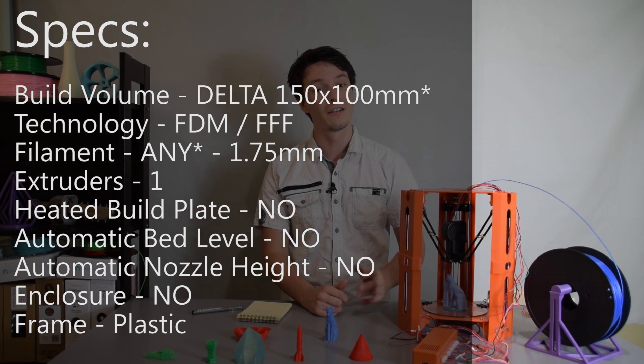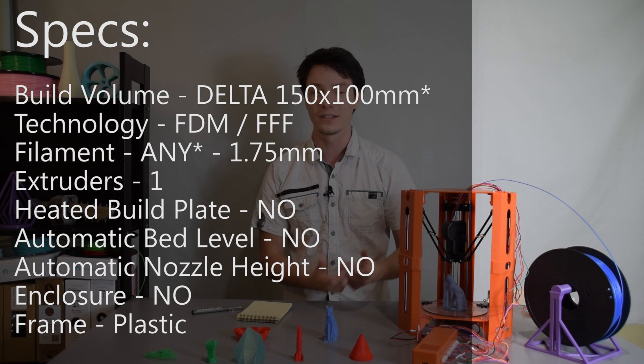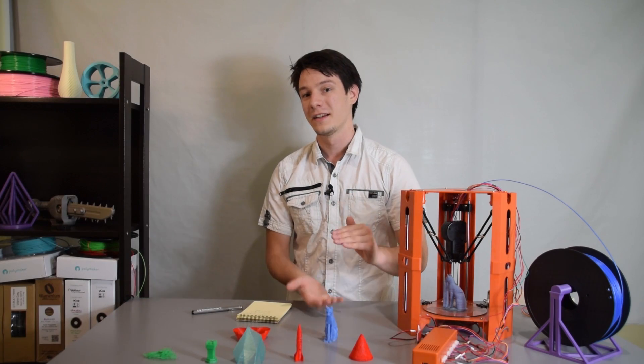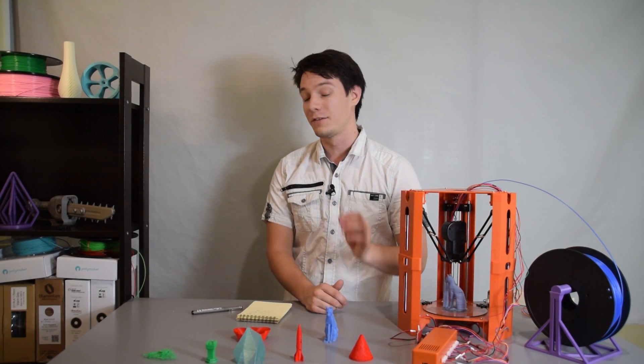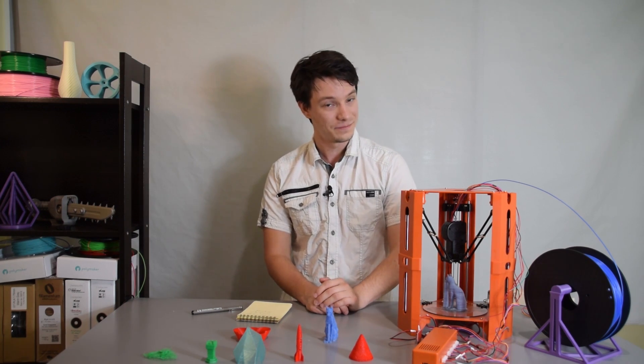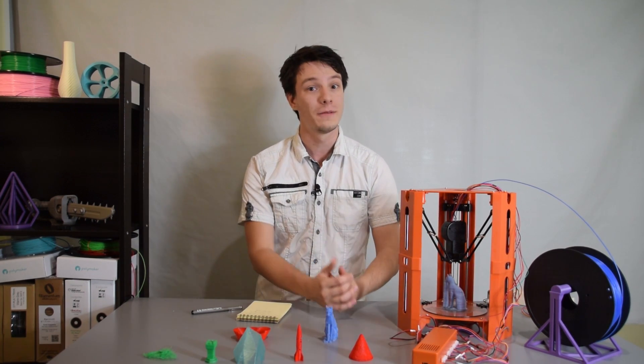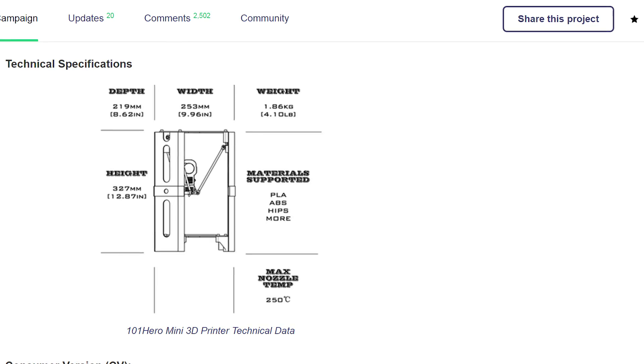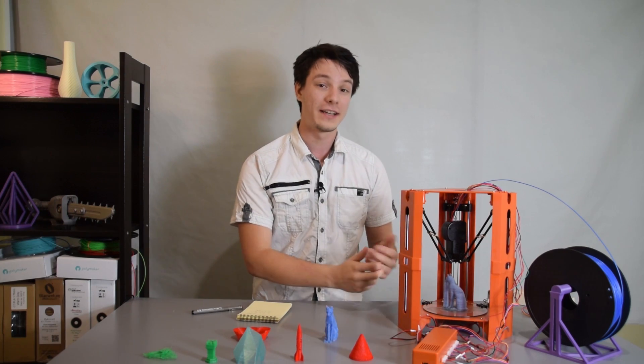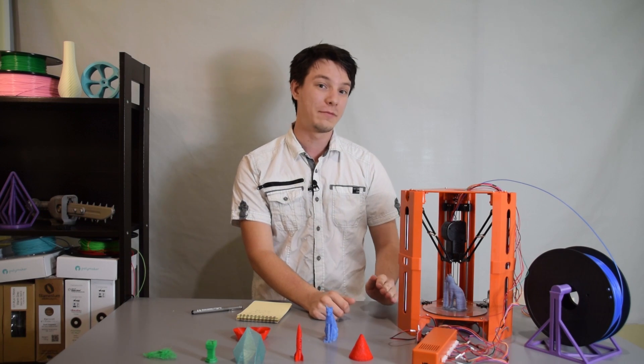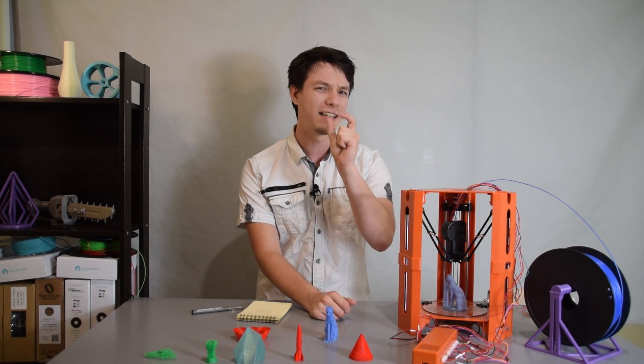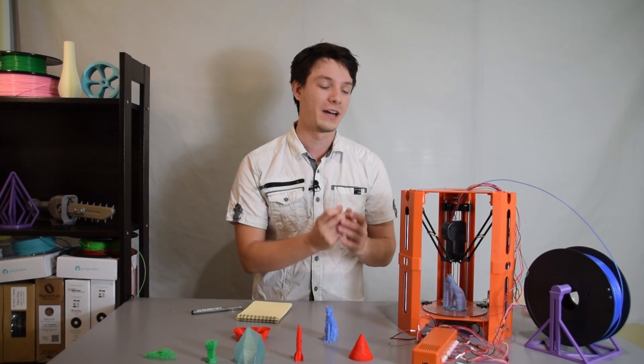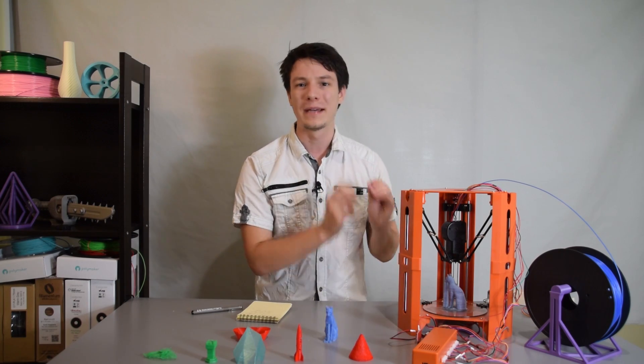The build volume, supposedly, on the 101 Hero is 150mm diameter. It's a Delta robot-style 3D printer. That means it has a diameter and a height, so 150 millimeters by 100 millimeters in the build volume. The machine takes 1.75 millimeter filament, which is quite common. According to their campaign, they claimed it could do PLA, HIPS, and ABS. However, as this machine does not have any kind of heated bed, you're never going to really print anything major in ABS or HIPS. You're really only going to be doing PLA on this thing.